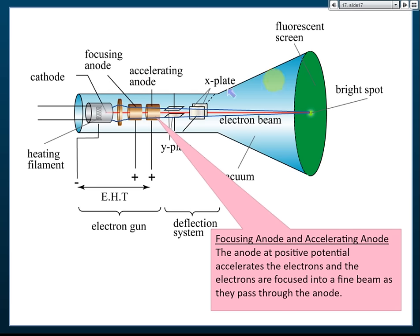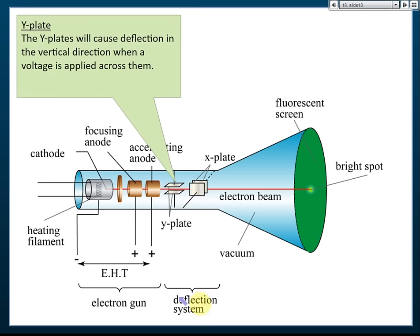The deflecting system has Y plates and X plates. The Y plates move the electron beam up or down. If the upper plate is positive and the lower is negative, the electron beam — which carries negative charge — deflects upward toward the positive plate. To deflect it downward, the polarity is reversed. The X plates deflect the beam left or right.